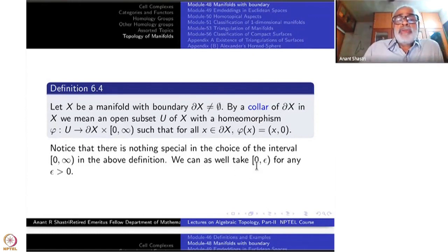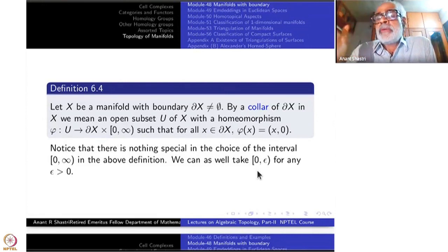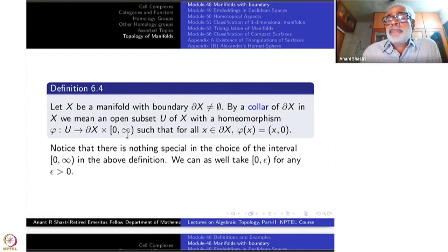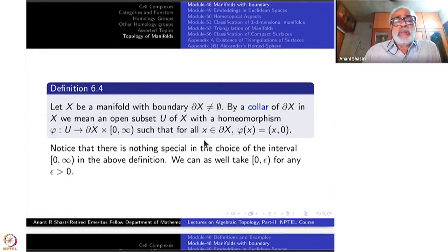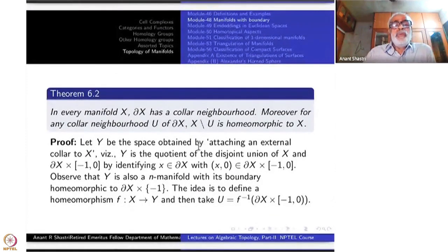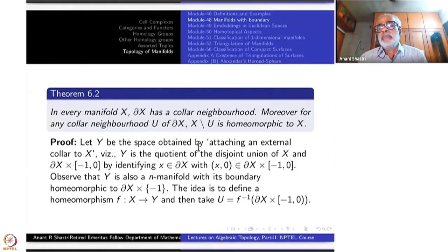Once you have some epsilon neighborhood like this, you can stretch it to infinity. So in the definition I use [0, ∞). Once there is some epsilon neighborhood, boundary of X cross [0, epsilon) is homeomorphic to boundary of X cross [0, ∞). The theorem states: in every manifold X, the boundary of X has a collar neighborhood.